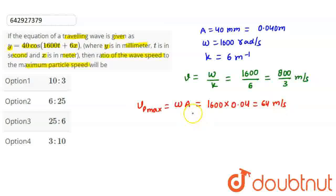So the ratio V divided by Vmax equals 800 by 3 divided by 64, which equals 800 divided by 192, which simplifies to 25 divided by 6. Option 3 is the correct answer.